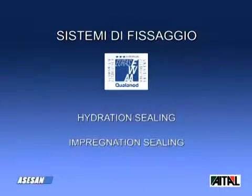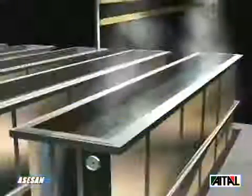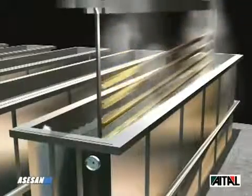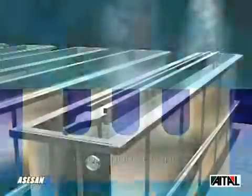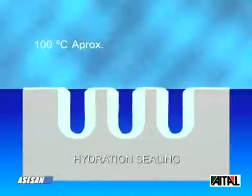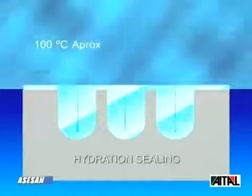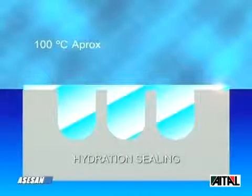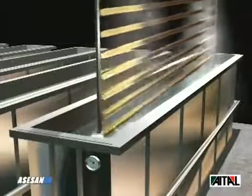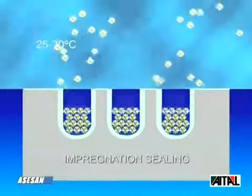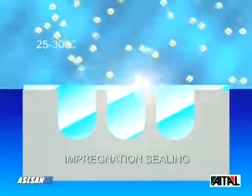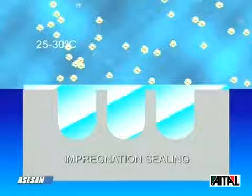The sealing systems suggested for the Qualanod quality label are respectively hydration and impregnation. In hydration sealing, when the anodised aluminium is placed in the relative tank, the pores of the anodic layer are still open. Using deionised water or steam, the aluminium oxide begins to hydrate and increase in volume, thus causing the complete closure of the pores. In impregnation sealing, the closure of the pores is obtained by immersing the anodised aluminium in a tank with deionised water containing mineral salts that deposit in the pores, producing a chemical reaction that totally closes the pores. Both systems produce an anodic layer that is highly resistant to abrasion and able to protect the aluminium from atmospheric corrosion.